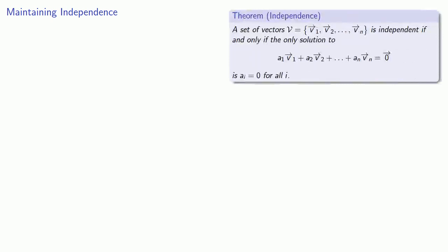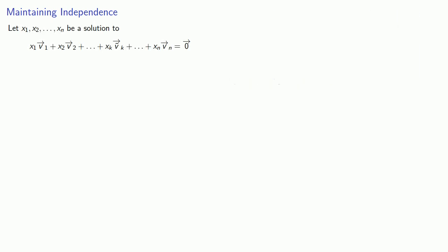We can prove or disprove that a set of vectors is independent by determining whether any linear combination equal to 0 must have all zero coefficients. Suppose I have a solution to a linear combination of the v prime vectors equal to 0. That's going to be our original set of vectors, except instead of vk we use v tilde k.